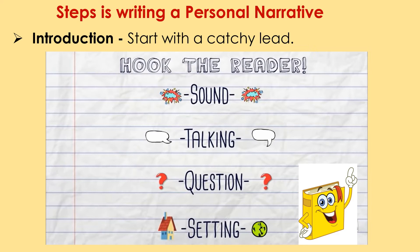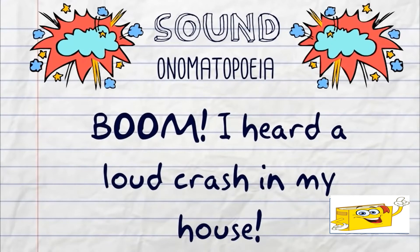We have steps in writing a personal narrative. First will be the introduction — start with a catchy lead. The first few sentences of your story should use a catchy lead, which can be: sound, talking, question, or setting. Let's talk about sound. Sound, or onomatopoeia, is used at the beginning of your paragraph or story. For example: Boom! I heard a loud crash in my house. The reader will be interested in what sound they hear in your story.